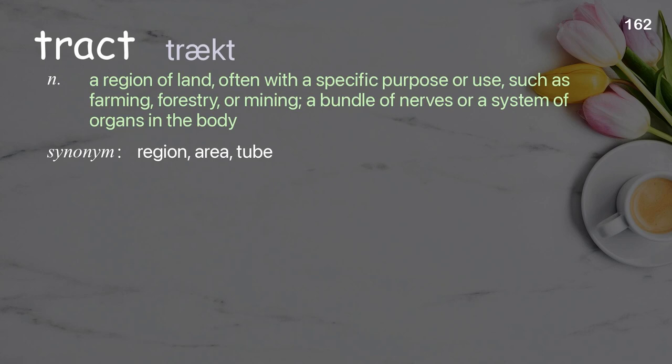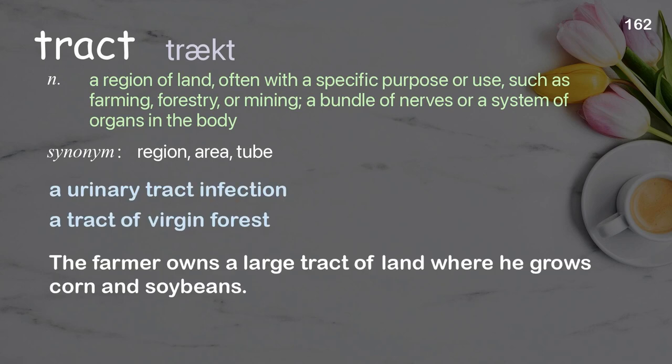Tract: a region of land, often with a specific purpose or use, such as farming, forestry, or mining; a bundle of nerves or a system of organs in the body. Examples: a urinary tract infection, a tract of virgin forest. The farmer owns a large tract of land where he grows corn and soybeans.